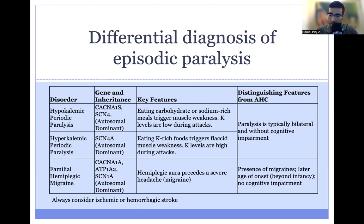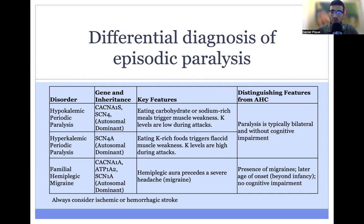In familial hemiplegic migraine, the key distinguishing feature is the presence of migraines — and in particular, the hemiplegia tends to precede the migraine. This order of symptoms is characteristic of familial hemiplegic migraine. Patients tend to present beyond infancy, and classically will not have cognitive impairment. You would also want to consider whether a patient presenting with unilateral paralysis could be having an ischemic or hemorrhagic stroke, which is certainly an indication for neuroimaging.